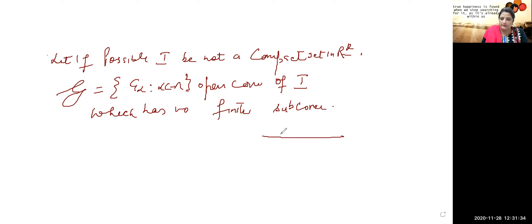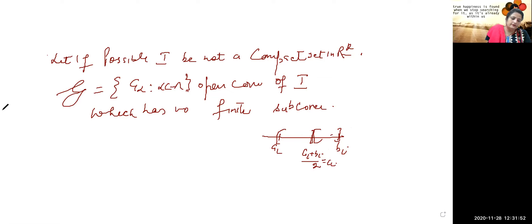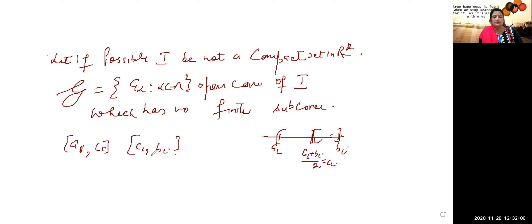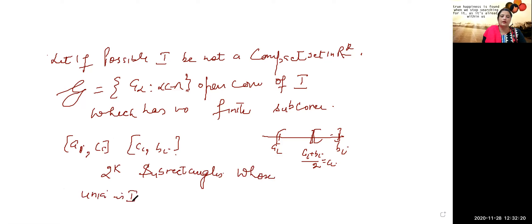Now we proceed the same way. We have the interval [aᵢ, bᵢ]. We perform bisection: take the midpoint cᵢ = (aᵢ + bᵢ)/2. If I is not covered, it means one portion is not being covered. Therefore the intervals [aᵢ, cᵢ] and [cᵢ, bᵢ] will give rise to 2ᵏ sub-rectangles whose union is I.